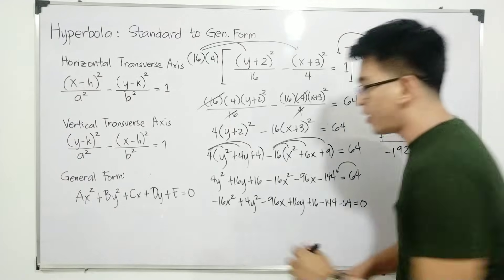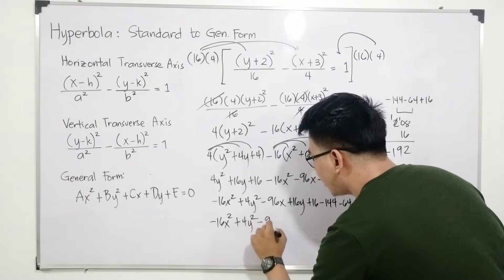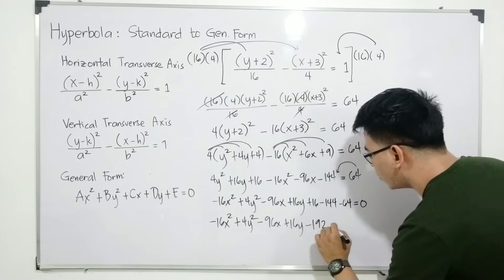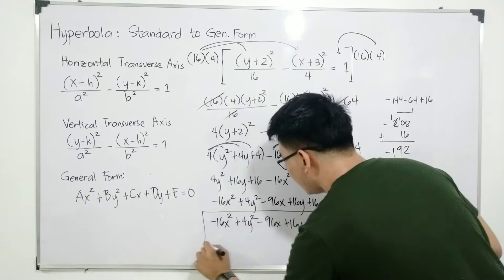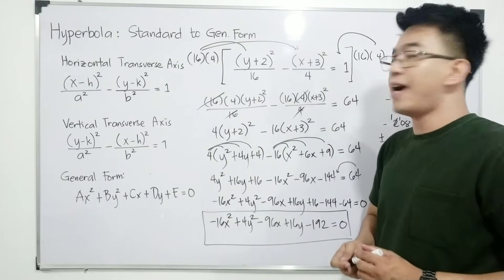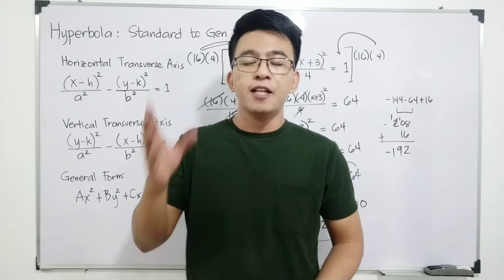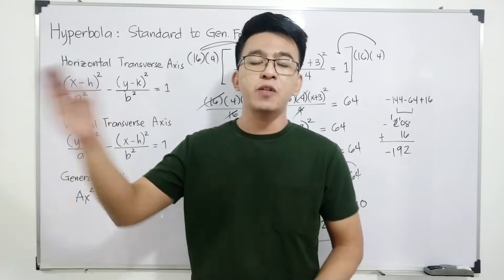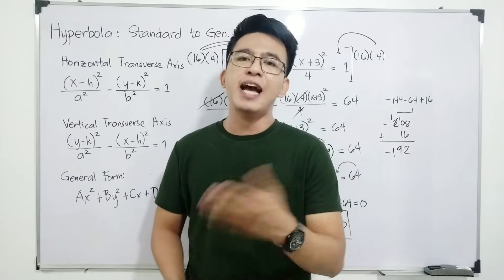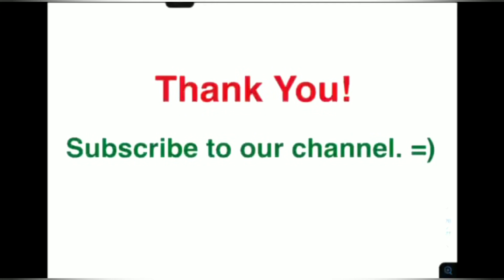The final answer is: negative 16x squared plus 4y squared minus 96x plus 16y minus 192 equals 0. This is now the general form of the equation of (y plus 2) squared over 16 minus (x plus 3) squared over 4 equals 1. I hope you click the bell button to be updated on our latest uploads. It's me Teacher Gon — maraming maraming salamat, bye bye!